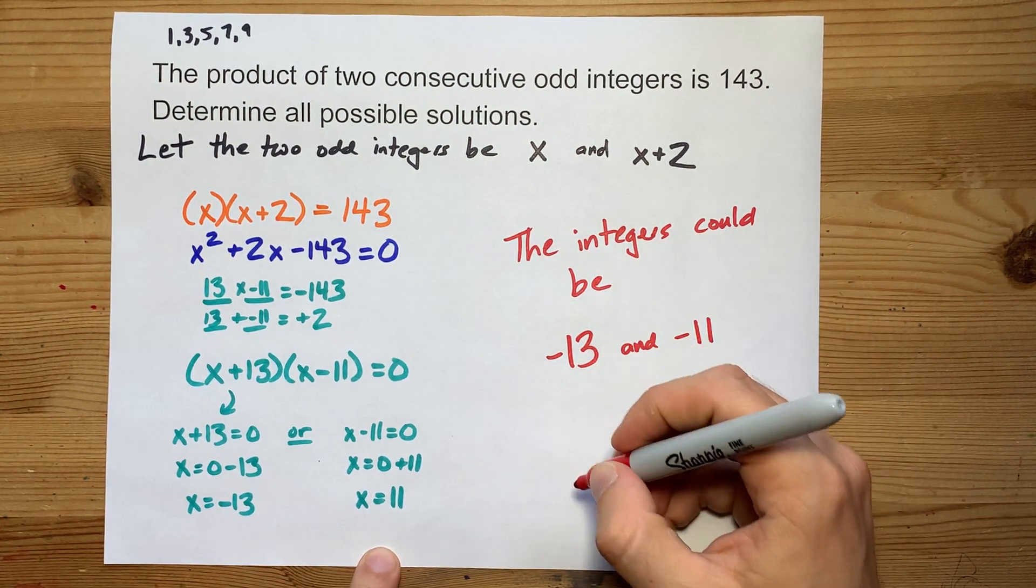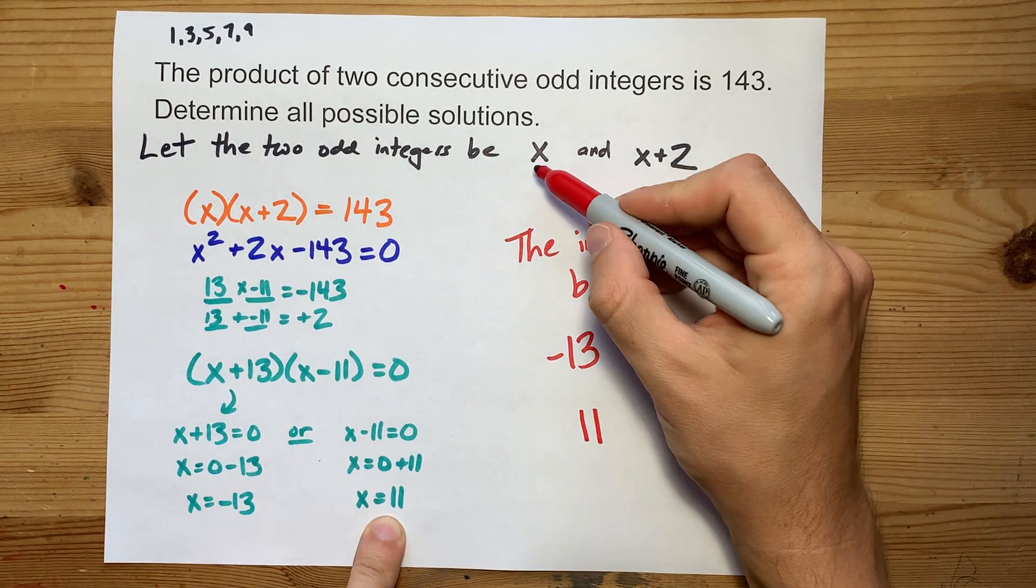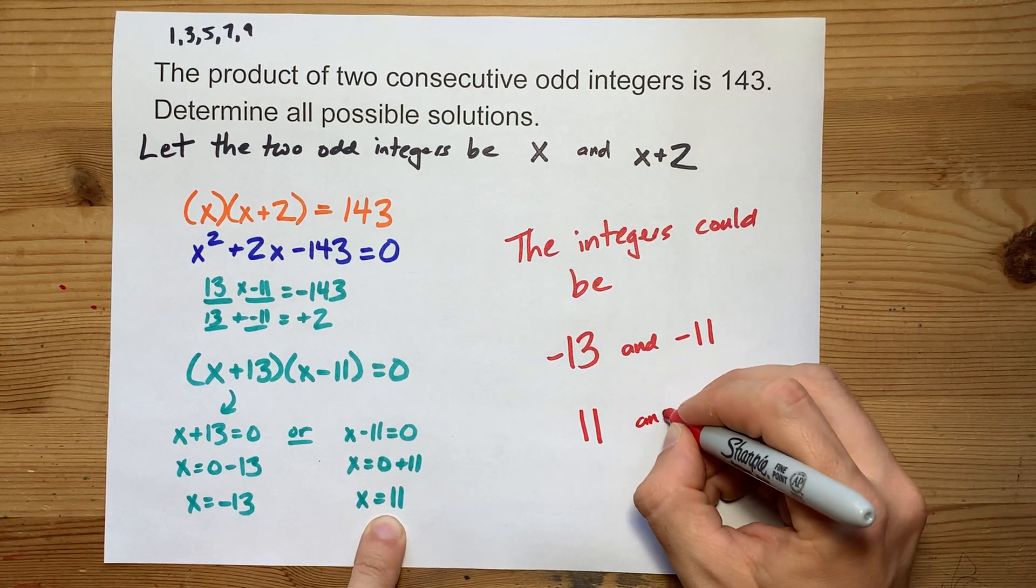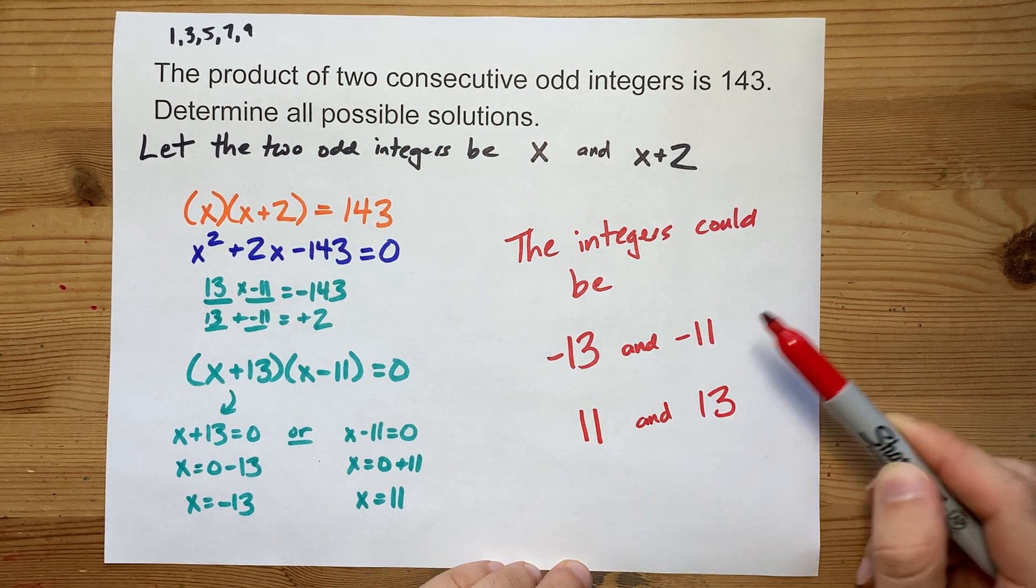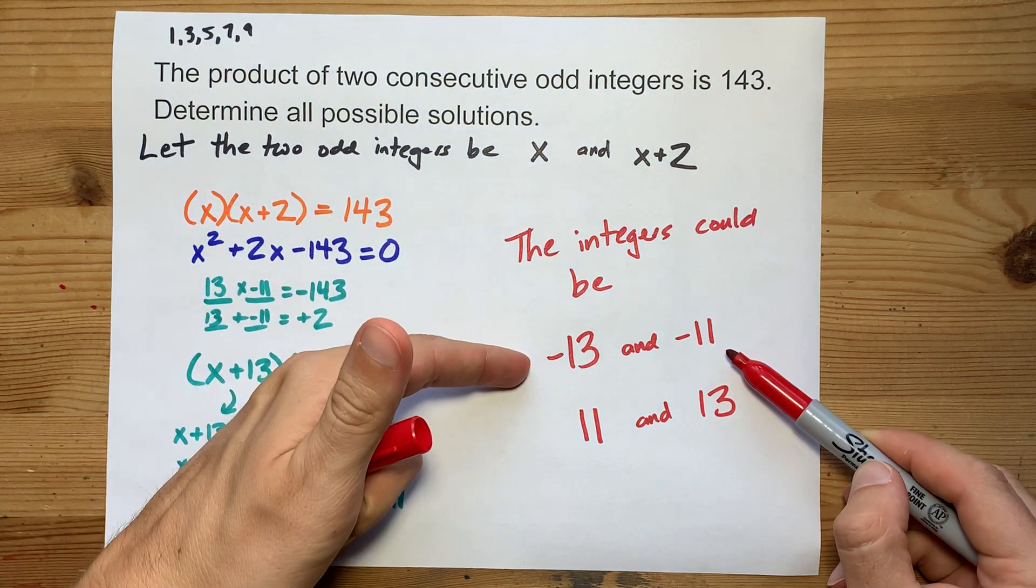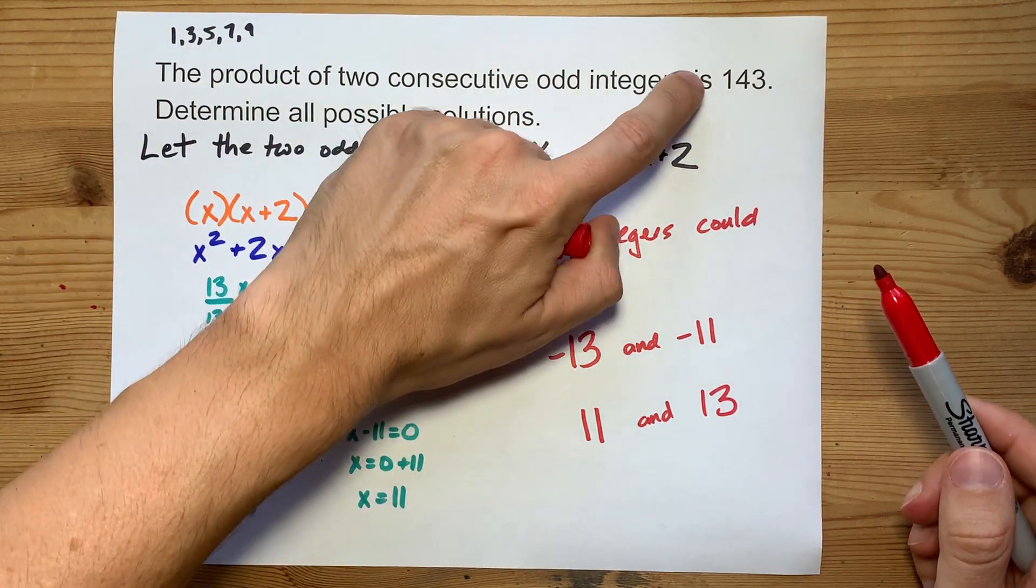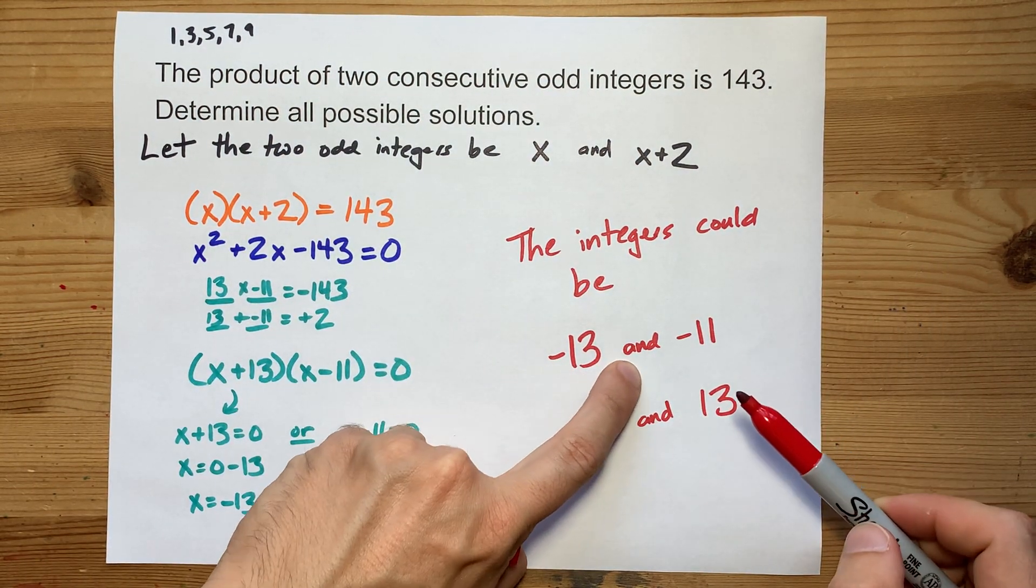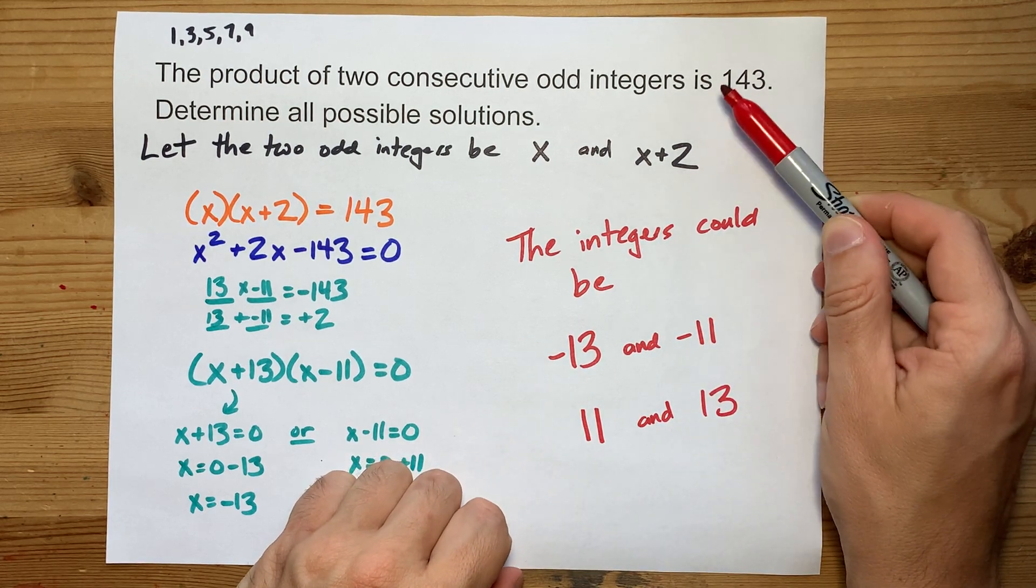Now, I also got the possibility that x is 11, and then the next number would be x plus 2. I have to add 2 to that, and I get 13. Is it true that negative 13 and negative 11 are consecutive odd integers? Yes. That comes right after that one. And is their product 143? Yes. Negative 13 times negative 11, the negatives will cancel to be positive 143.